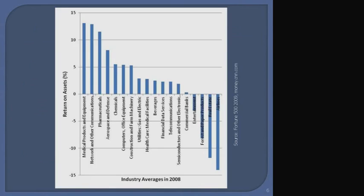Here we see some data illustrating this point. On the left axis, we have return on assets, one measure of profitability — the income of the firms over the asset base of those firms. This is averaged across players in the industry, and this is data from 2008. On the left-hand side, we see highly profitable industries like medical products and equipment, network and communications equipment, and pharmaceuticals. We can hypothesize why these are such profitable industries. On the far other extreme, we see other industries — real estate — and then at the very bottom, airlines.